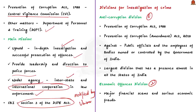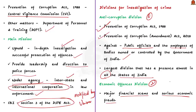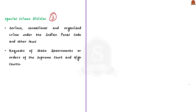The Anti-Corruption Division investigates cases under the Prevention of Corruption Act of 1988 and the 2018 amendment, covering public officials and employees of Central Government, PSUs, and government-controlled bodies. It is the largest division with a presence in almost all states. The Economic Offences Division investigates major financial scams, serious economic frauds, fake Indian currency notes, bank frauds and cybercrime. The Special Crimes Division investigates serious, sensational and organized crimes under IPC and other laws on the request of state governments or by orders of the Supreme Court and High Courts.